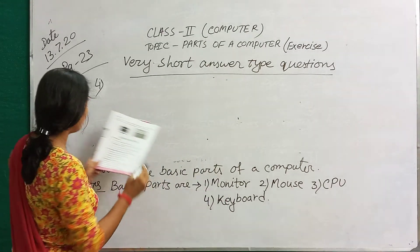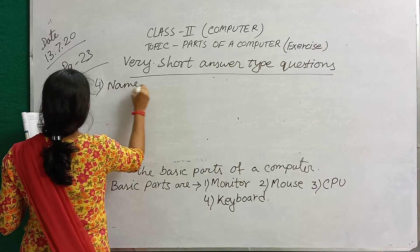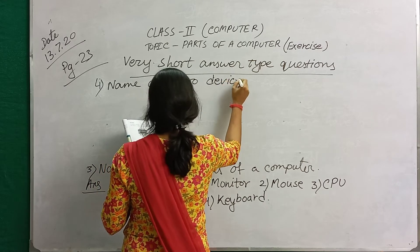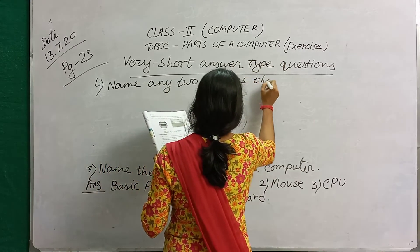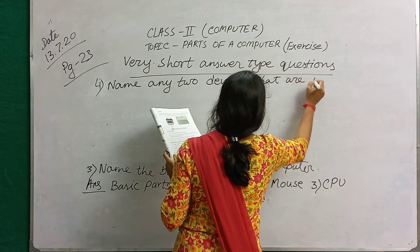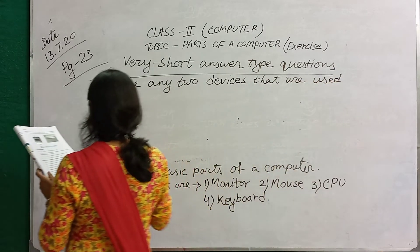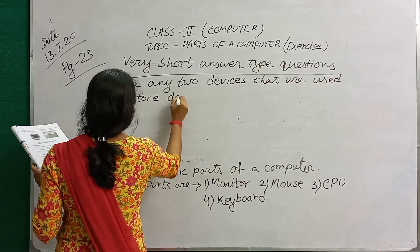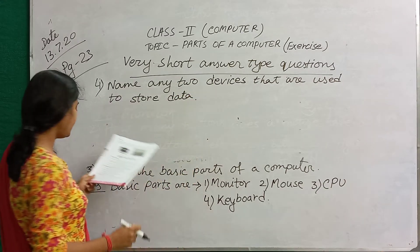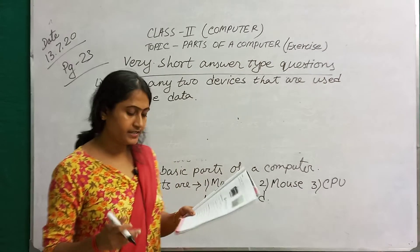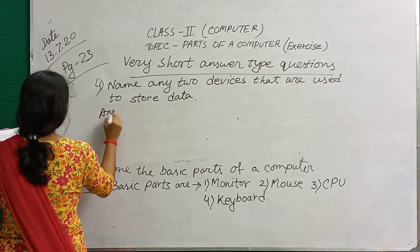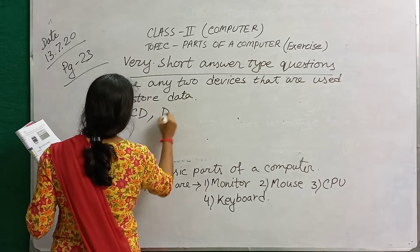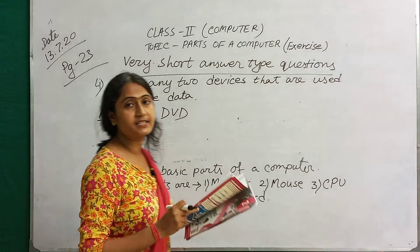Question number 4: name any two devices that are used to store data. Write the names — CD and DVD. CD stands for compact disc and DVD stands for digital versatile disc.